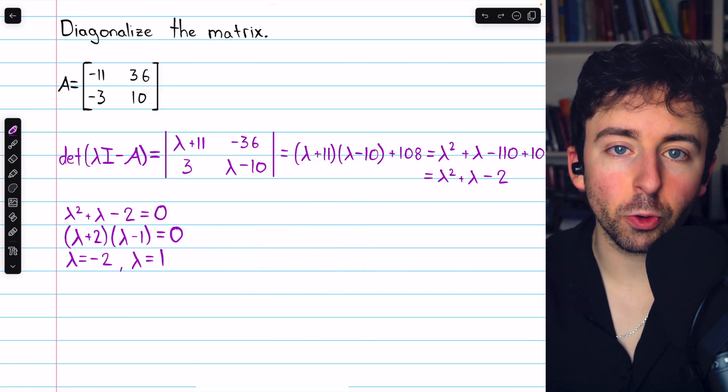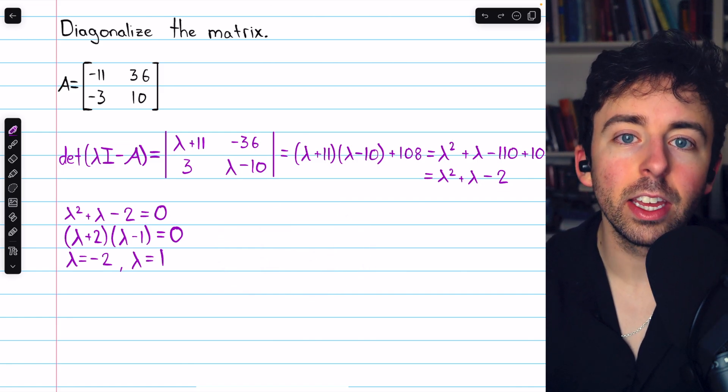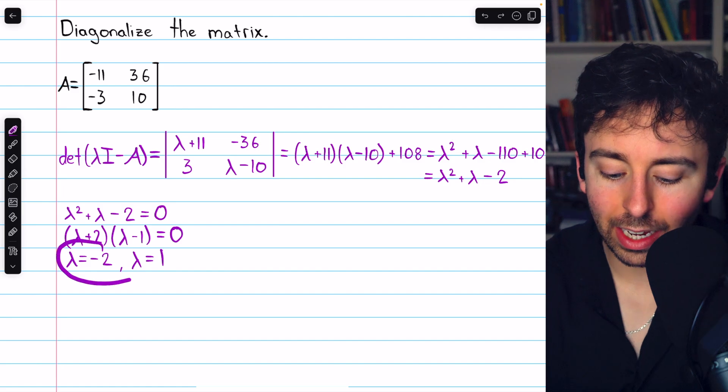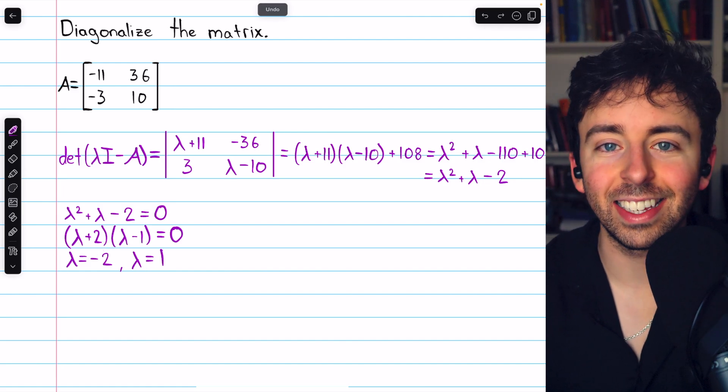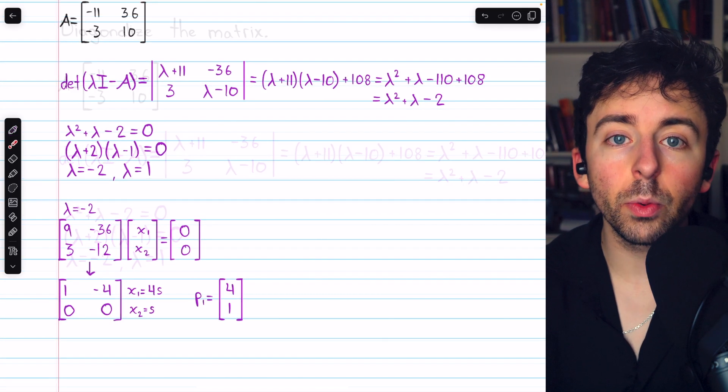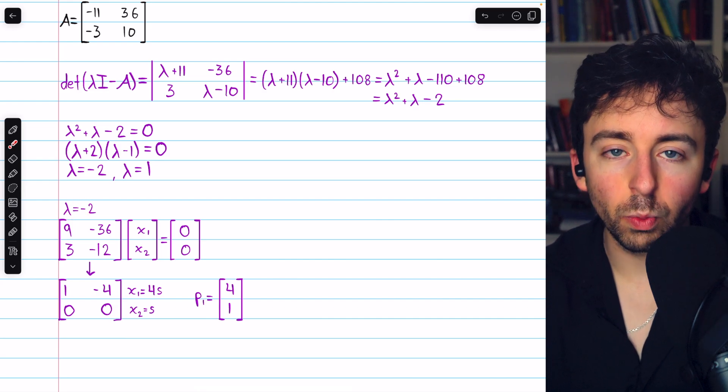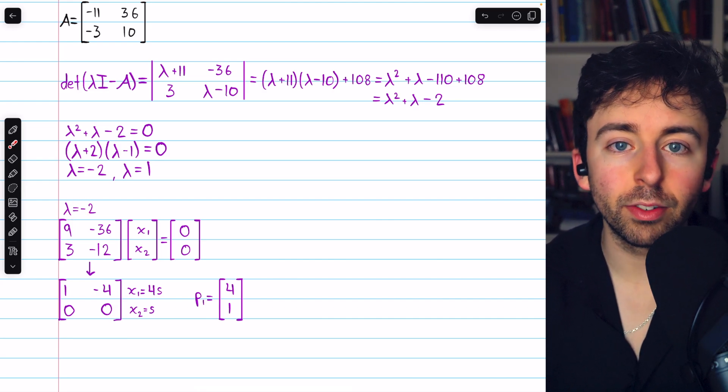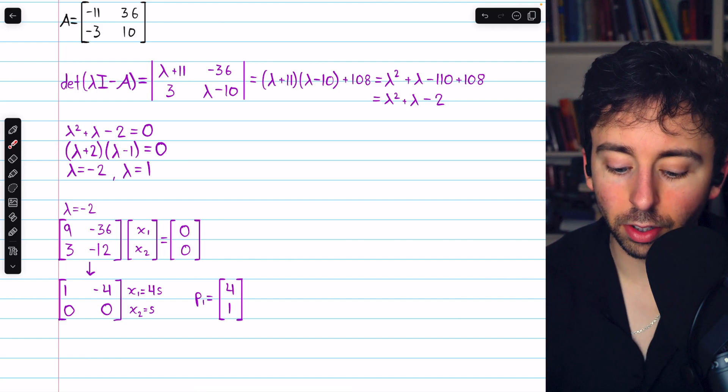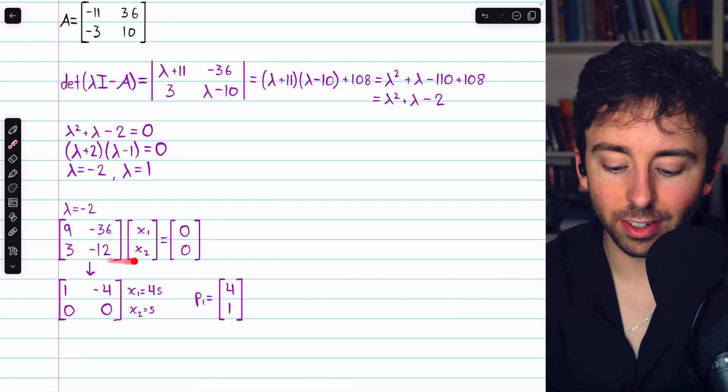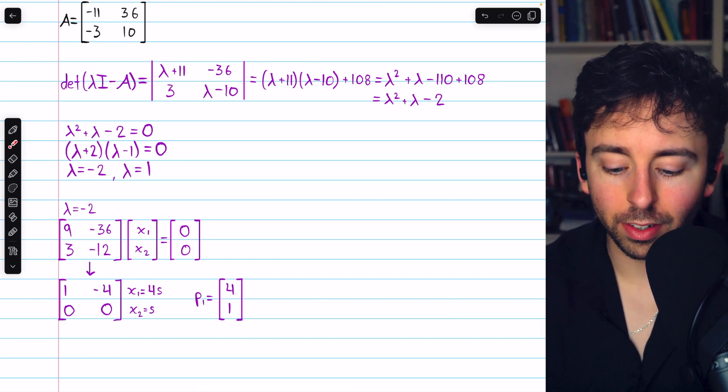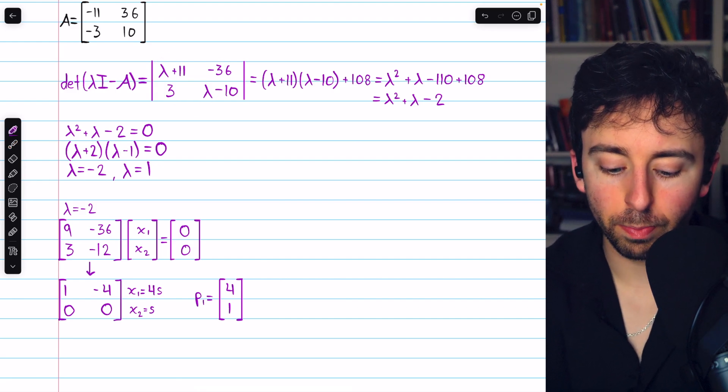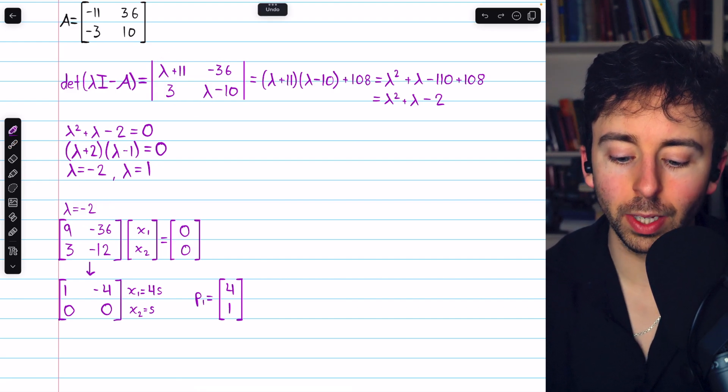But in order to actually find the matrix that diagonalizes A, we need to now find the eigenvectors corresponding to these eigenvalues. Beginning with the eigenvalue -2, we need to find a basis for the solution space of this system. This coefficient matrix is just this matrix, but with λ = -2 plugged in.